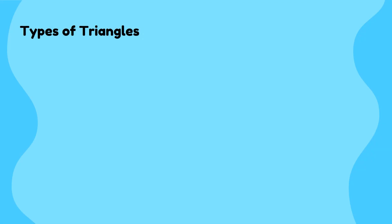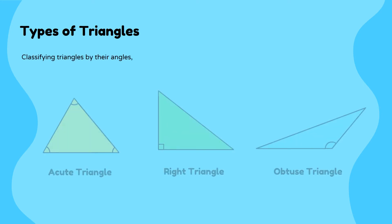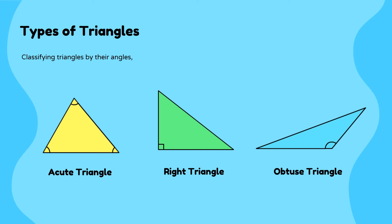We can also describe a triangle by the types of angles it has. In an acute triangle, all angles are smaller than 90 degrees. A right triangle has a right angle, which is equal to 90 degrees. And in an obtuse triangle, one of its angles is larger than a right angle.